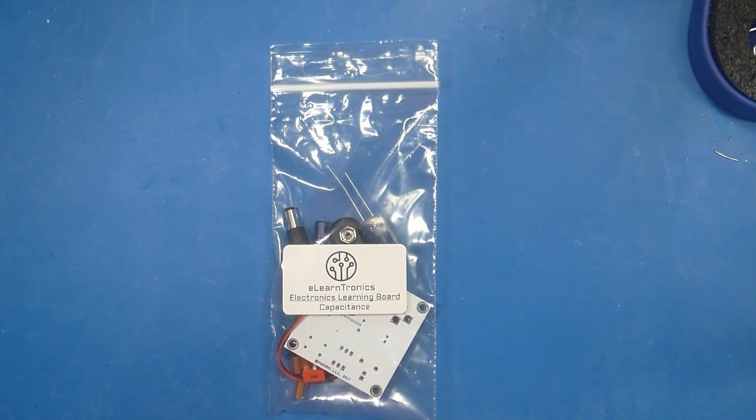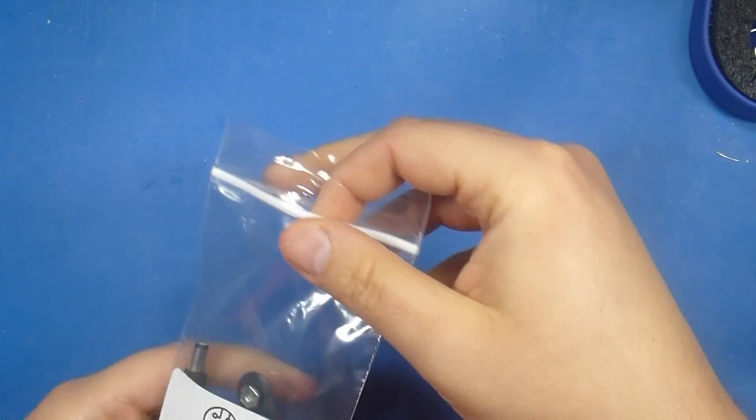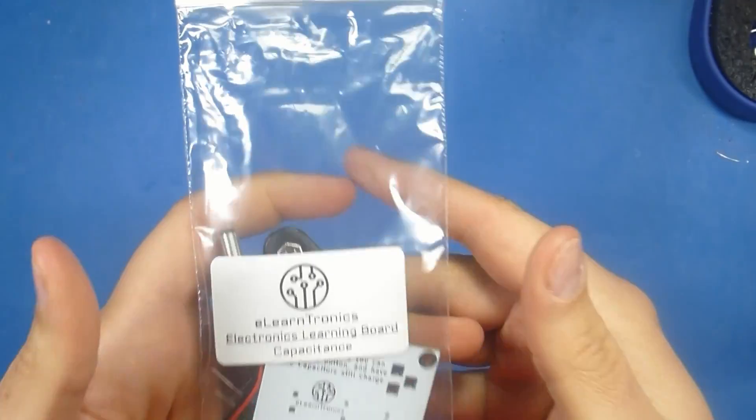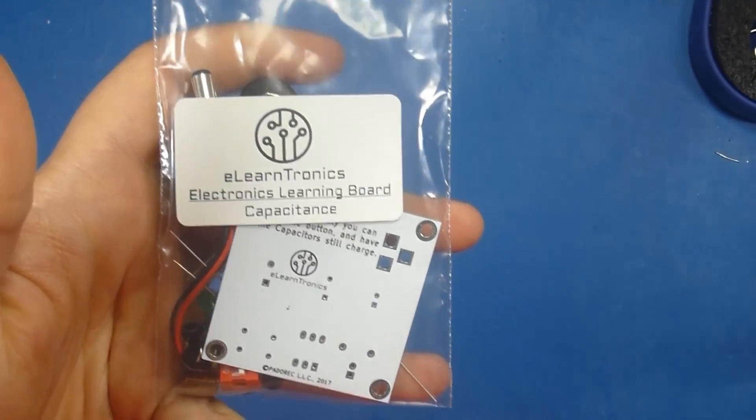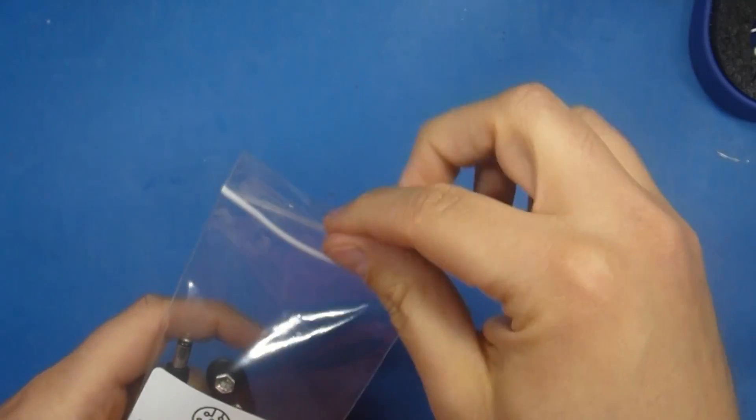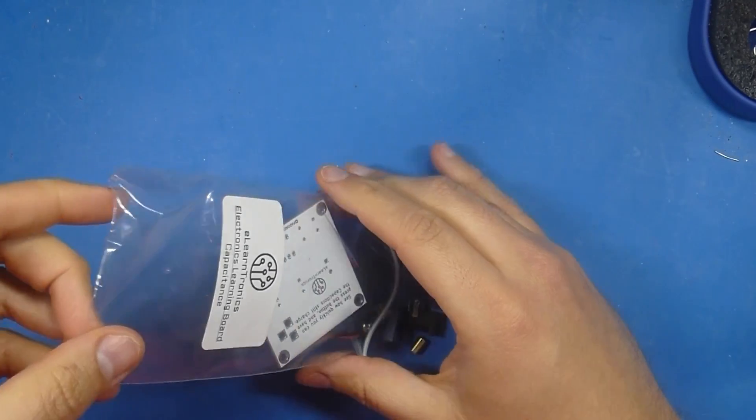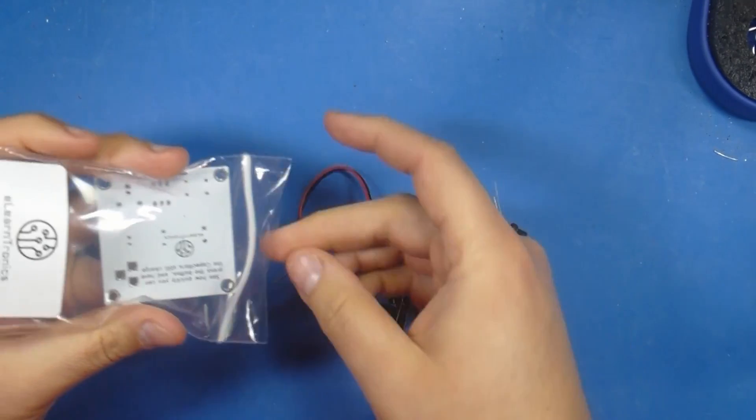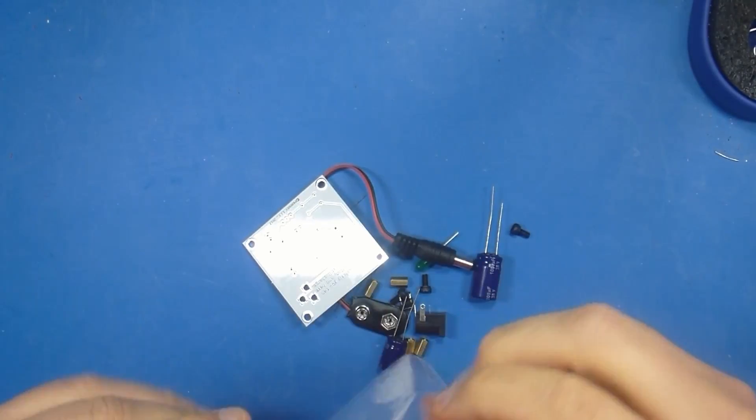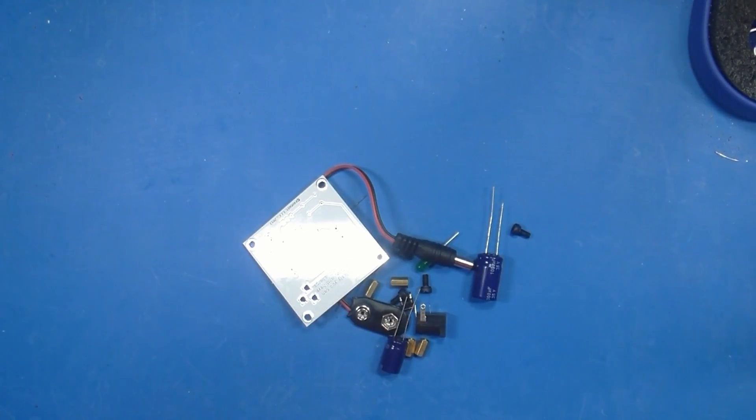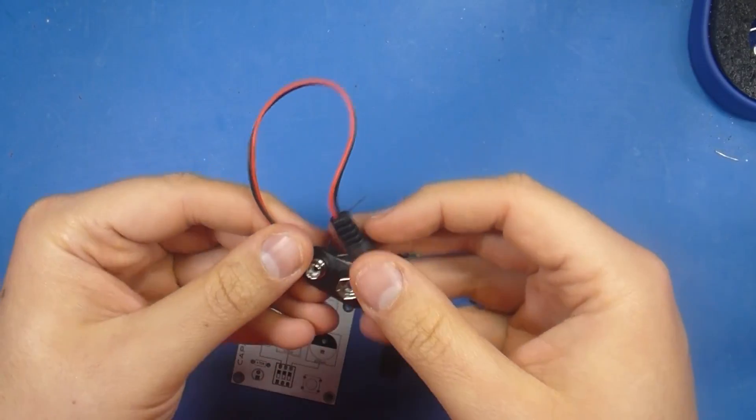Okay, here we have our capacitance learning board. Yours may be in a different package than this one. This is one of our earlier packagings. So you can see all of the components that you have in there. Let's dump this out and see what we have. We'll get rid of the bag because we don't need that anymore. And let's see what we have in here.